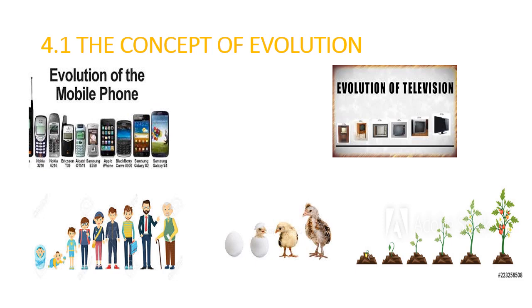In the first picture, you see a picture of a mobile. Earlier when the mobile was invented, it was just a basic phone. Now we have a phone full of technology like camera, music, games and so on. In the second picture, you see a picture of a television. Earlier we had a black and white TV. Now we have a smart television.